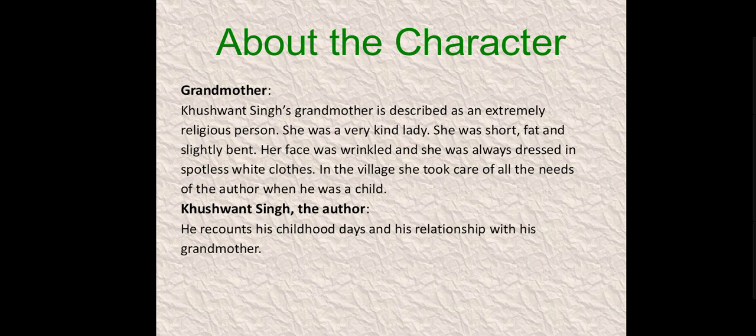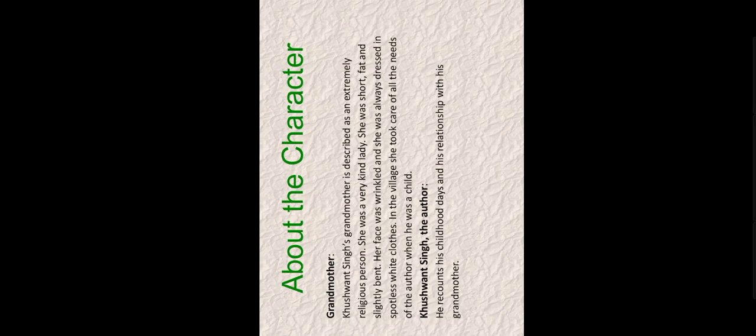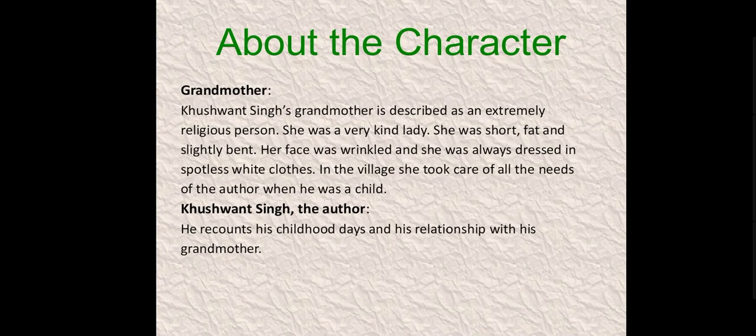The first character is Kushwant Singh's grandmother, described as an extremely religious person who continuously engaged in religious activity throughout the day. She was a very kind lady — short, fat and slightly bent, her face was wrinkled, and she was always dressed in spotless white clothes. The second character is Kushwant Singh himself, the author, who recounts his childhood days and his relationship with his grandmother.